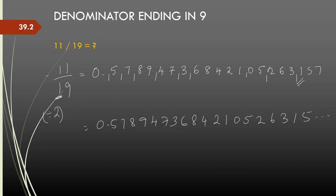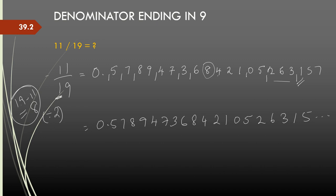There is also a shortcut. 19 minus 11 — the difference between the numerator and the denominator — is 8. And I see where I got 8 in the sequence, and if you notice the numbers on both sides add to 9. For example, 5 and 4 add to 9, 7 and 2 add to 9, 8 and 1 add to 9, 9 and 0 add to 9. So if you find the difference between the numerator and the denominator, after that point you can easily write the remaining digits because each will be 9 minus the earlier digit. This shortcut means you have reached halfway through the recurring decimal digits.